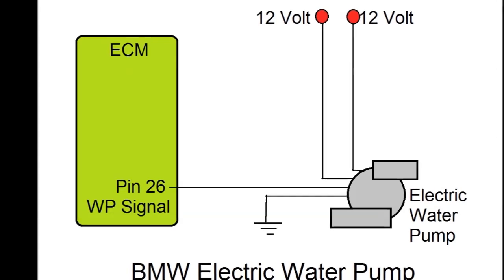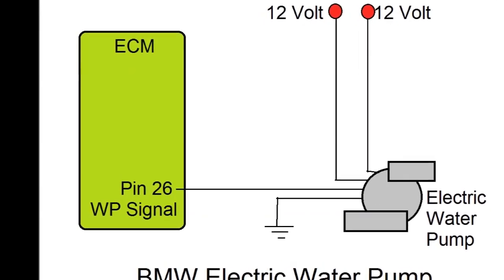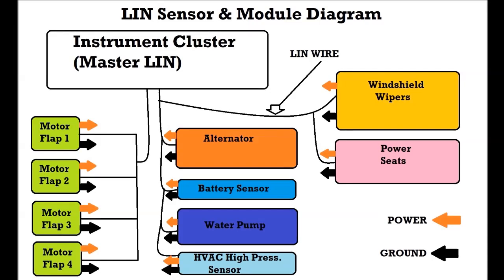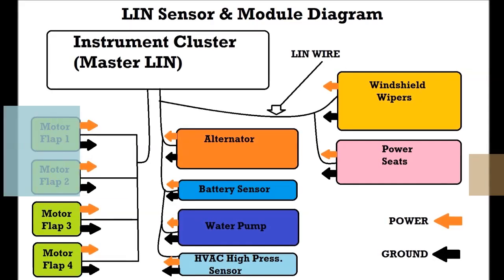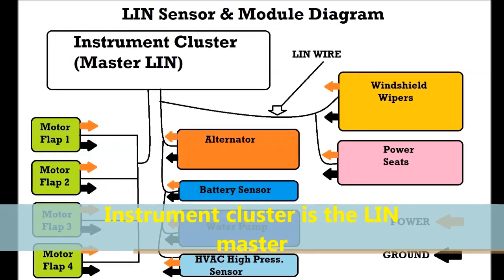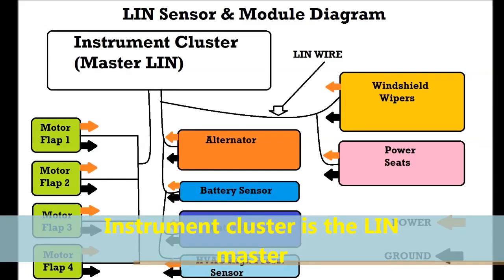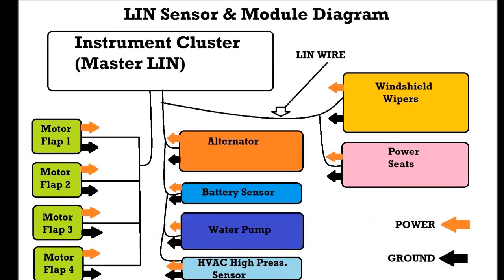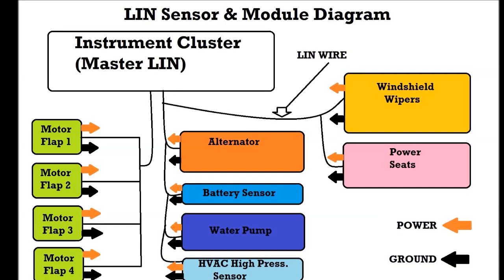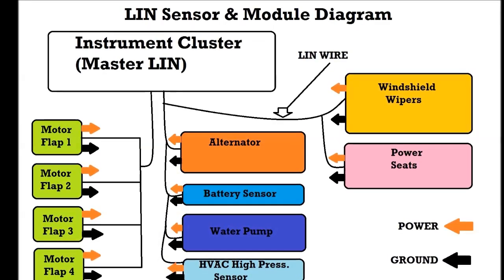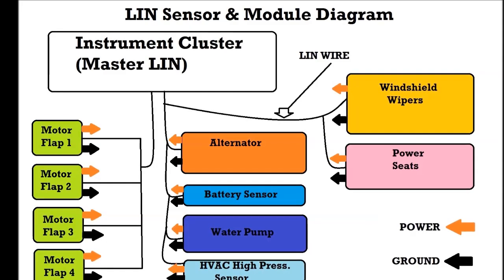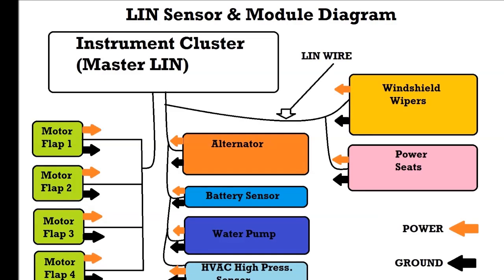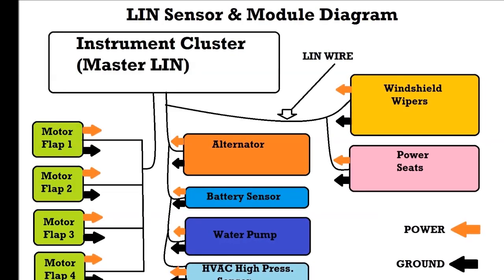The LIN master in 99% of cases is the instrument cluster. So if you have an issue where you don't have communication with all your LIN components, the first place to look is the instrument cluster, which serves as a gateway that ties together different networks like CAN and LIN — and in the case of BMW, for example, FlexRay, which is another network they use.